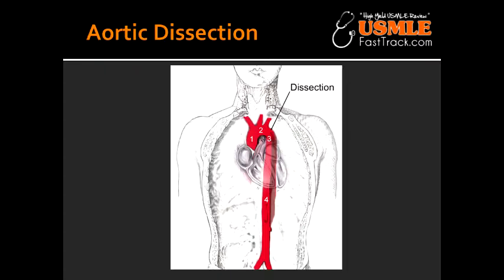What would you see on a chest x-ray in a patient suffering from aortic dissection? On a chest x-ray of a patient suffering from aortic dissection, you would see mediastinal widening.